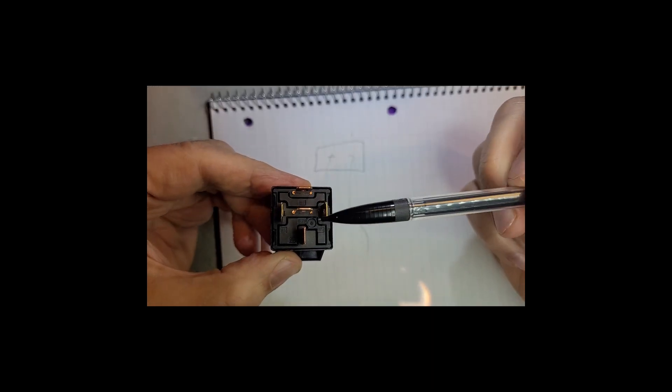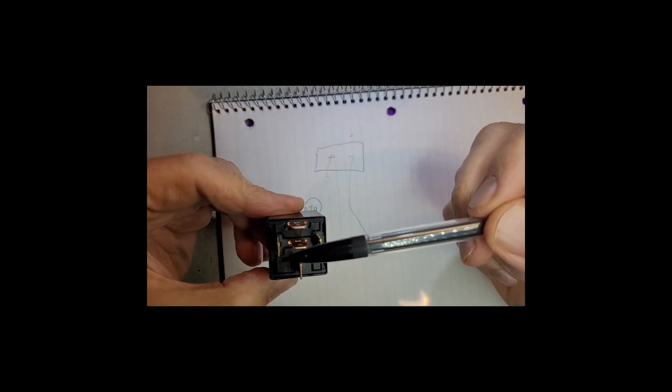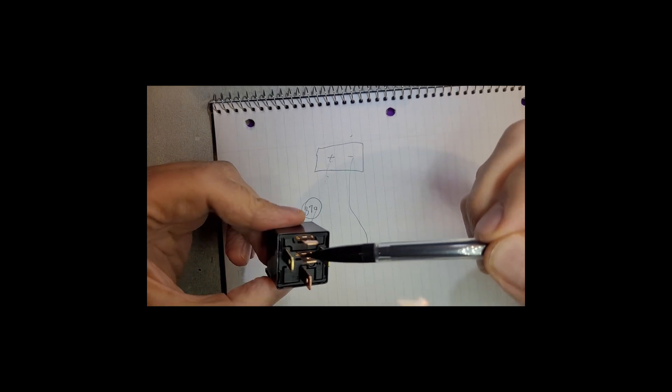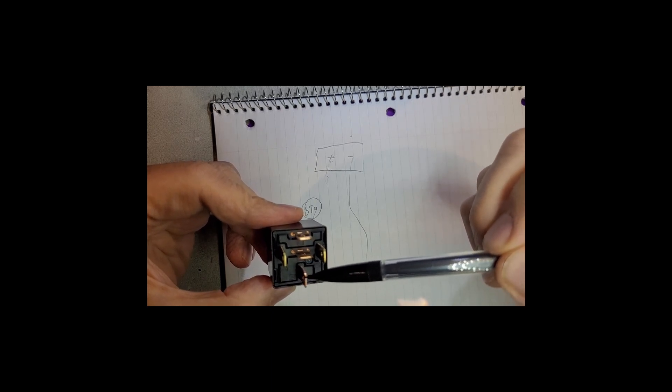This one's 85, 86, 87A is the middle one, and number 30 is this one.